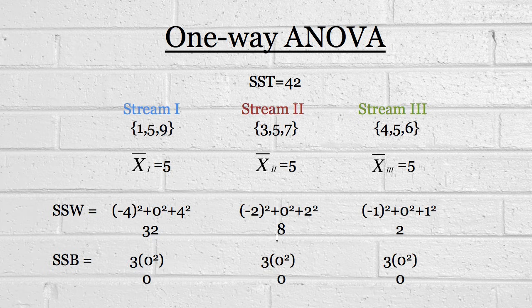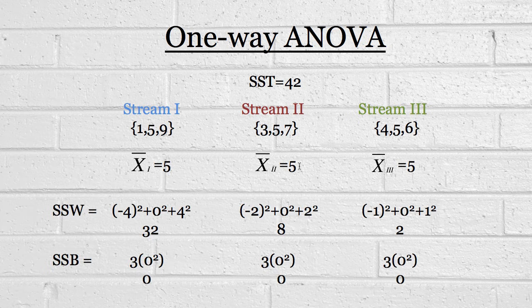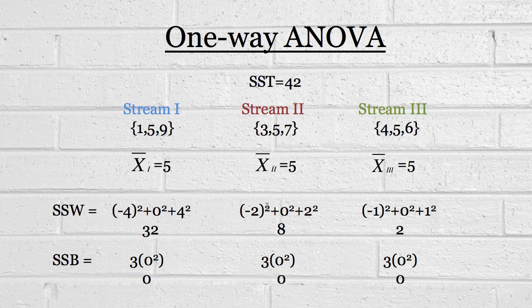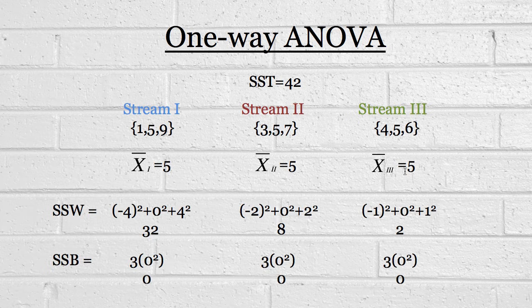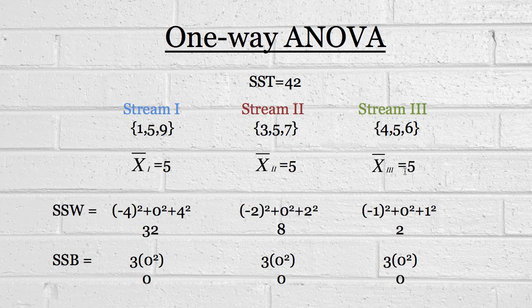So, the component of the sum of squares within groups for this particular stream is 32. And we can do that again with stream two. The mean of that stream is five. We go three minus five, and we get minus two, and we square it. So, the sum of squares within groups looks at the mean of the group or the mean of the stream and does that calculation, that sum of squares calculation, with that mean.